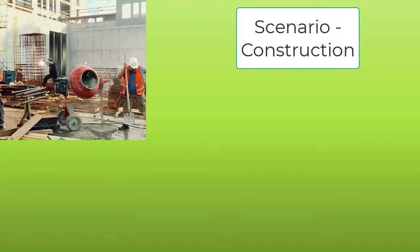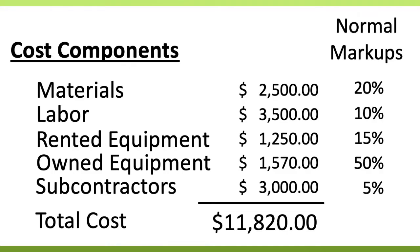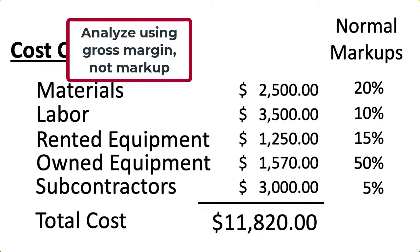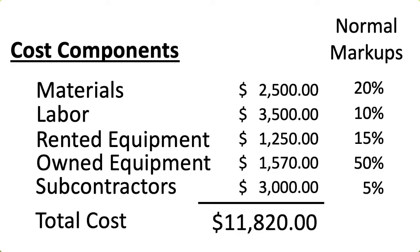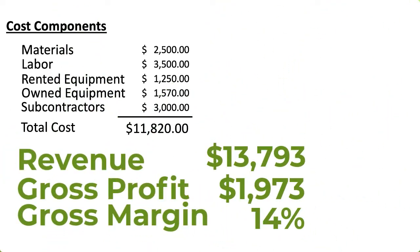Suppose you have a construction company. Here are your cost components: materials, labor, rented equipment, owned equipment, and subcontractors. Your total cost for the job is $11,820. There is a strong likelihood that the markup is very different for each class of cost. When you are analyzing your overall performance, these markups tend to lose some meaning. If you summarize the cost and look at the overall markup, it bears little resemblance to the individual components — so don't bother. Focusing on the earned gross margin helps to better analyze your financial performance. When your banker or investors review your financials, they generally will not look at markup; they will review the gross margin. Here's the math for this scenario.